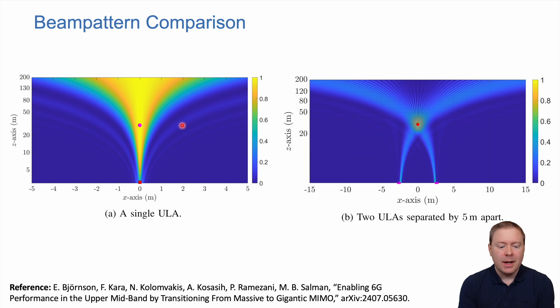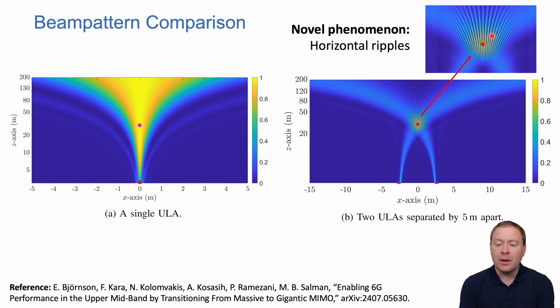Here's what we showed before with one panel of half a meter width. If we cut it into two halves and move them five meters apart, focusing the beam from two different directions, we get a focusing effect. The yellowish beamforming gain area is only around the user location. Zooming in, there's a ripple effect. We have finite depth, focusing the signal in the distance domain, but in the width domain, we have strange ripples.